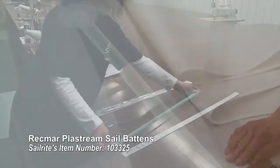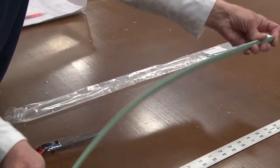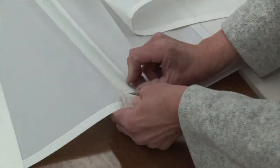These ABS plastic battens are unbreakable. They are the most popular battens worldwide. Plastream sail battens are easy to cut and file to the perfect size.